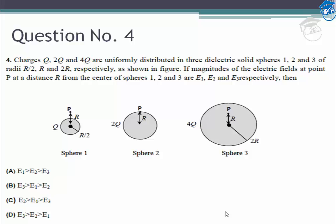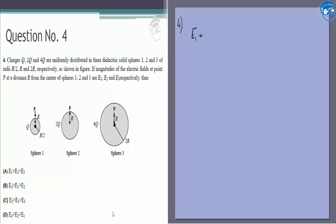E₁ will be, since the charge on the first sphere is Q, kQ/R². E₂ will be k times 2Q divided by R², which equals 2kQ/R². For E₃, we will only take the portion of the sphere that is enclosed within the region of radius R, not the whole sphere.